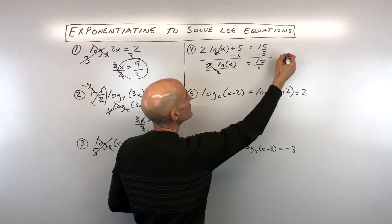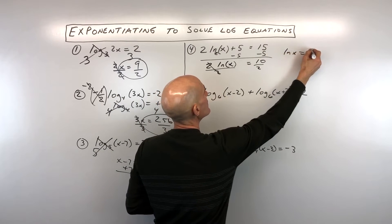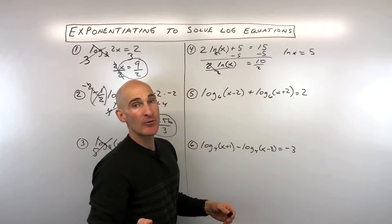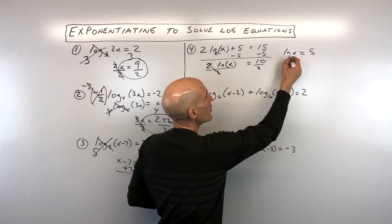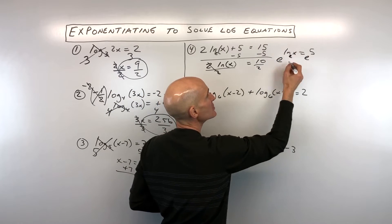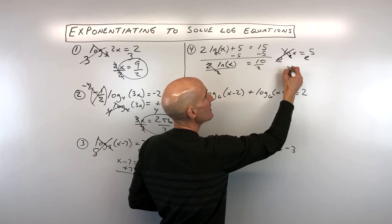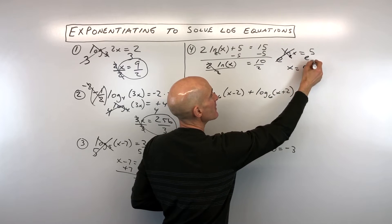So now we're down to natural log of x equals 5. And then again, remember, when you see that natural log, that's really log base E. So what we're going to want to do is we're going to exponentiate both sides using that base E. And we get x equals E to the 5th.